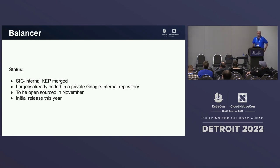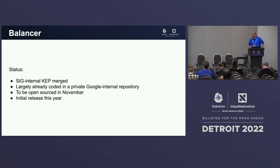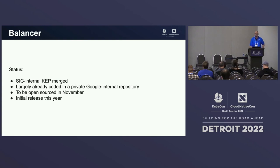What is the status of the Balancer project? We reached an agreement about the API within SIG. The code is almost done in the Google internal repository. Google initially wanted to start it on GKE first, but changed their mind and it will be open-sourced in November, assuming all open-source code reviews go smoothly. We expect the initial release sometime this year.